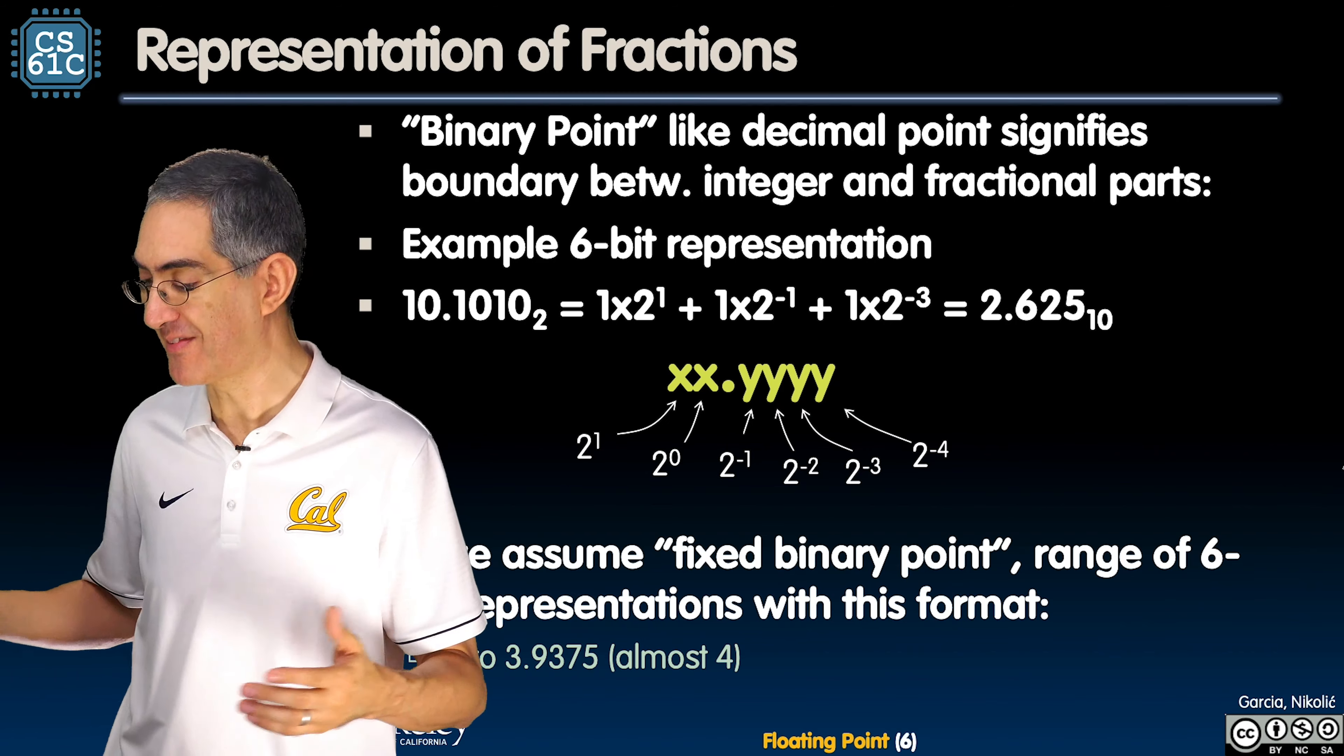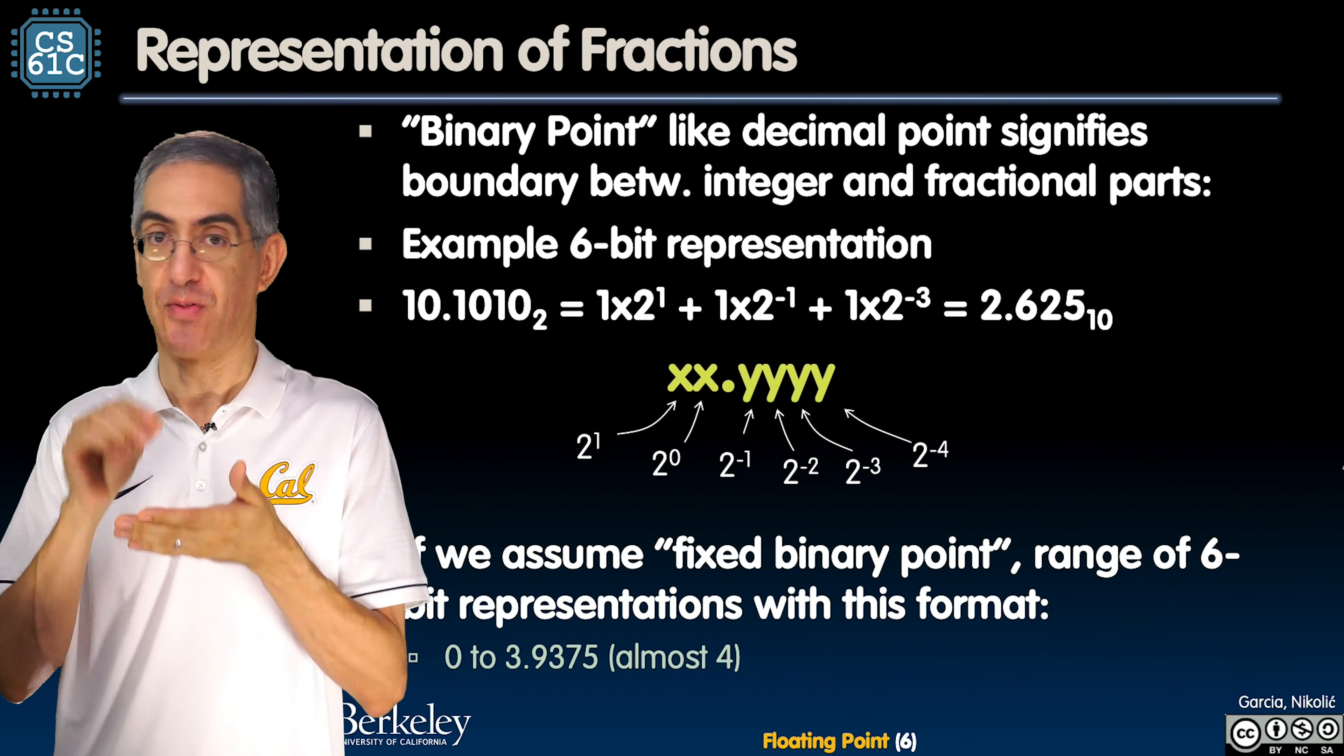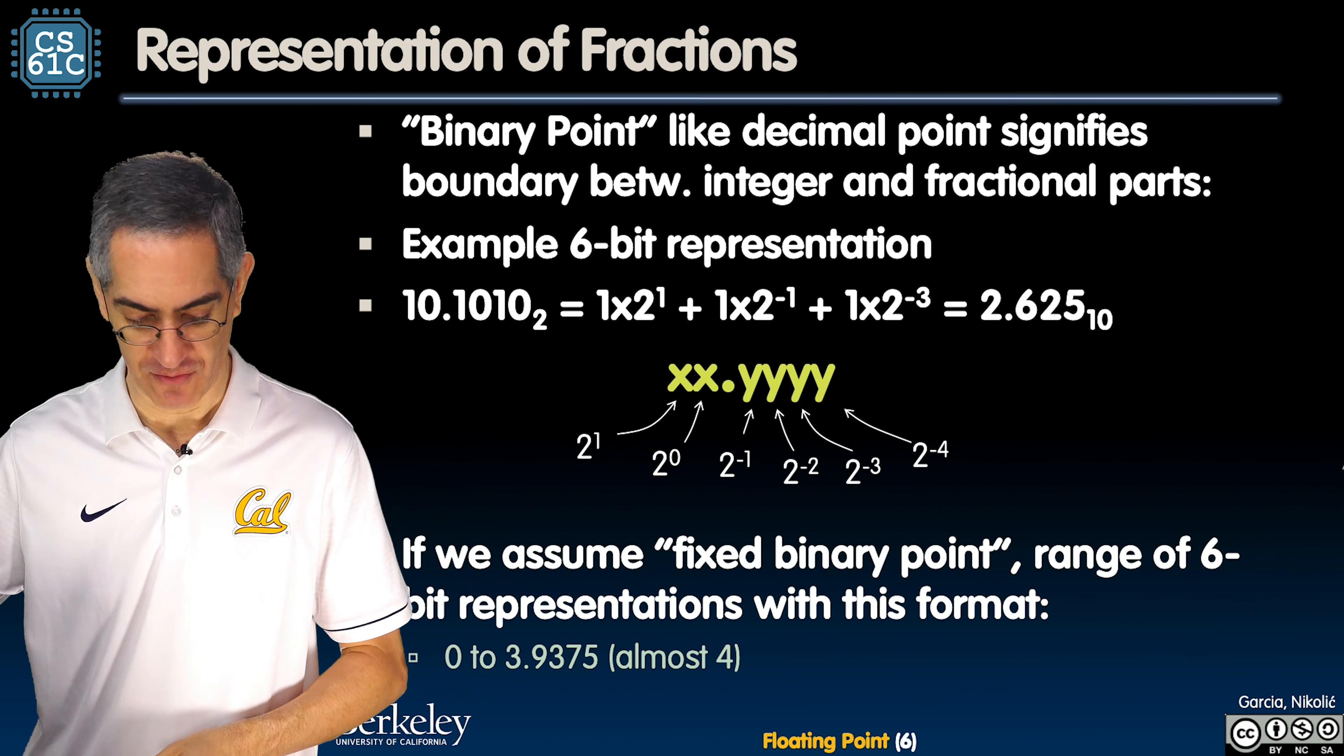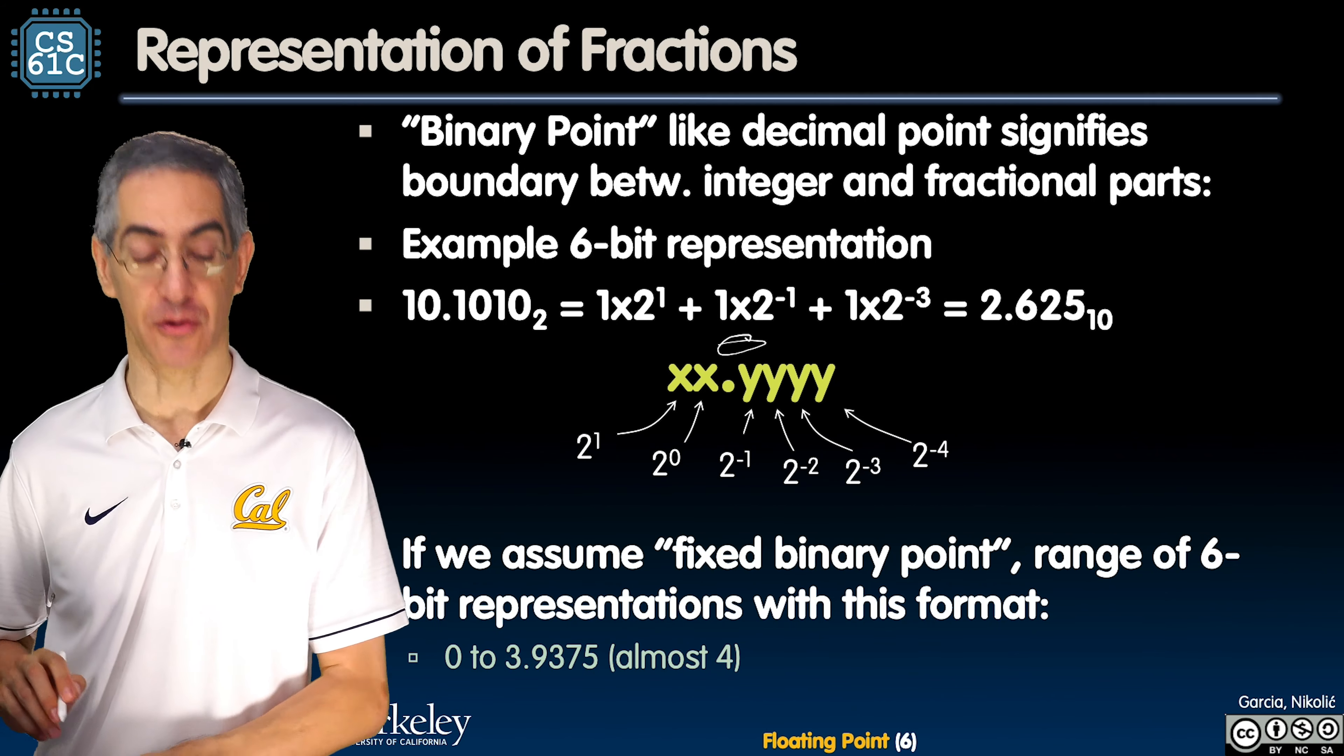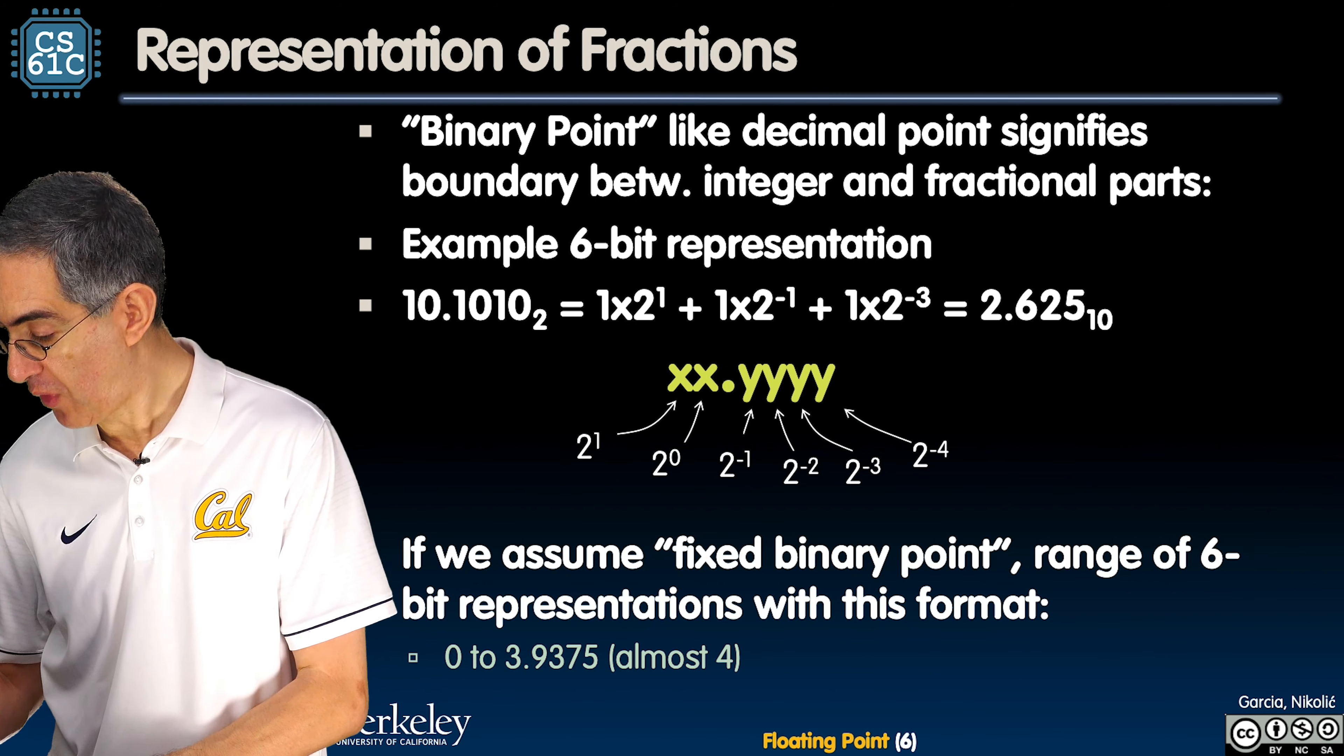So for example, if I had six bits, and you and I agree, here's my six bits, and you and I agree that the binary point is going to be two in from the left, then what numbers can we do? Let's think about that here. So I can go from all zeros, so that's obviously all zeros, zero integer part, zero fractional part.